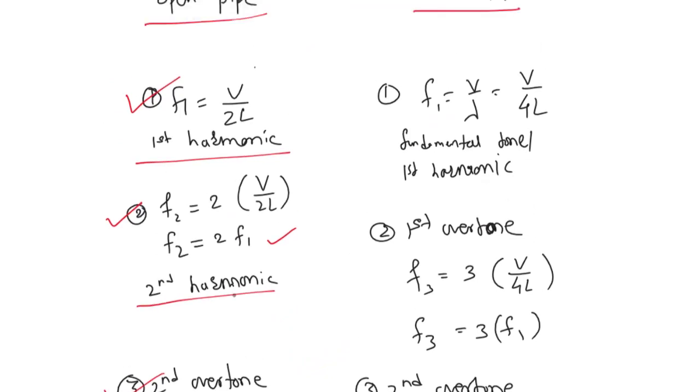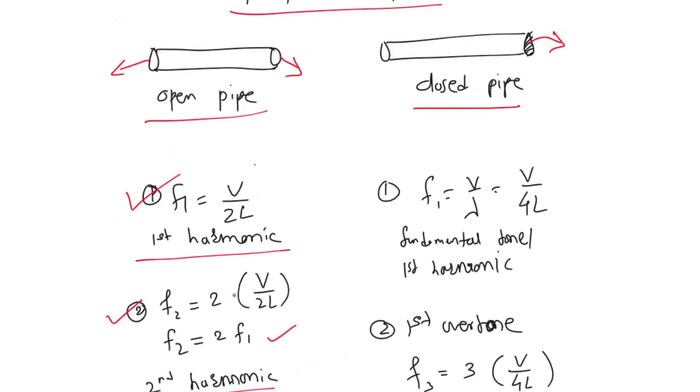For the closed pipe, there is some variation in terms of what kind of harmonics we get. The fundamental tone, or first harmonic, is given by v/4L.